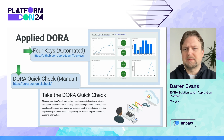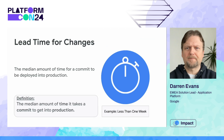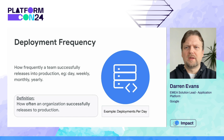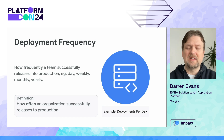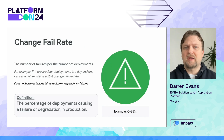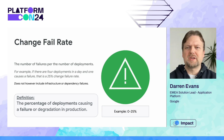For a quick baseline of your team's software delivery performance using a manual approach, you can also use the DORA DevOps quick check. Lead time for changes is the median amount of time for a commit to be deployed into production. Deployment frequency is about how frequently the team successfully releases into production — it could be a couple of times a day. Change fail rate is about the number of failures per the number of deployments. For example, if there are four deployments in a day and one causes a failure, that is a 25% change failure rate.